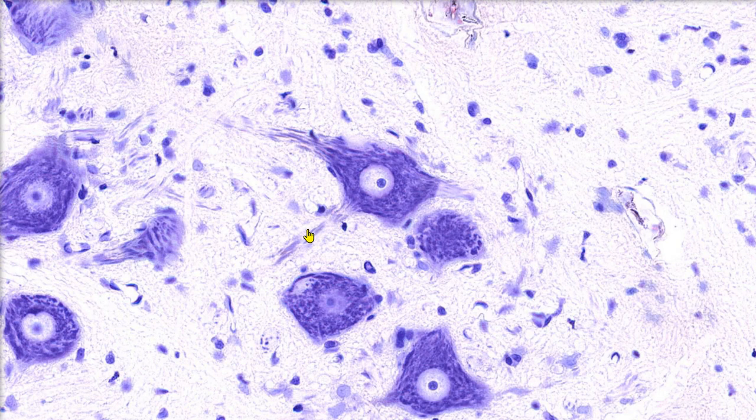We can see a few dendrites emerging from this side of the cell and a single axon extending away at the other side.